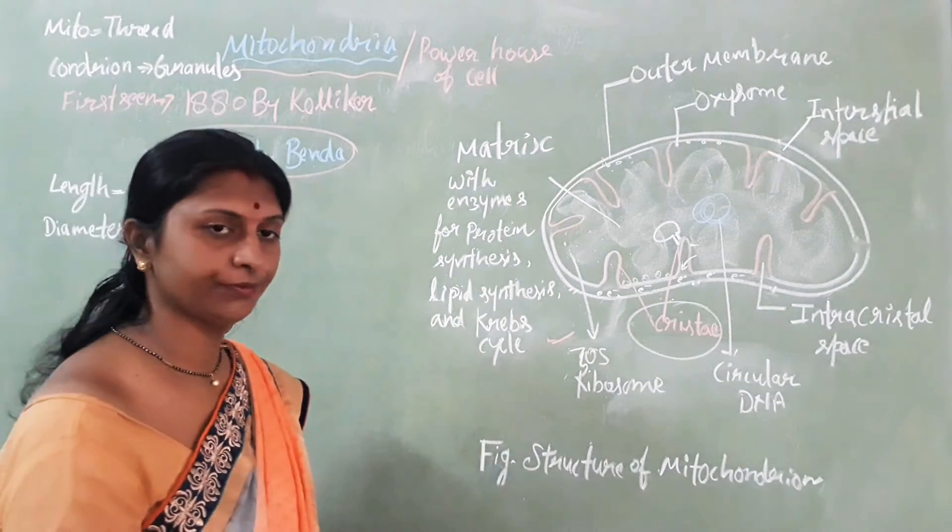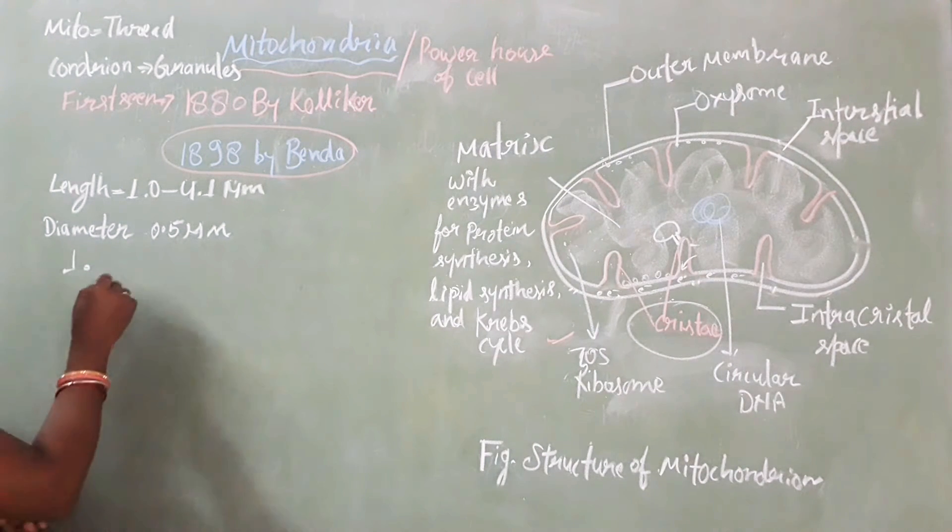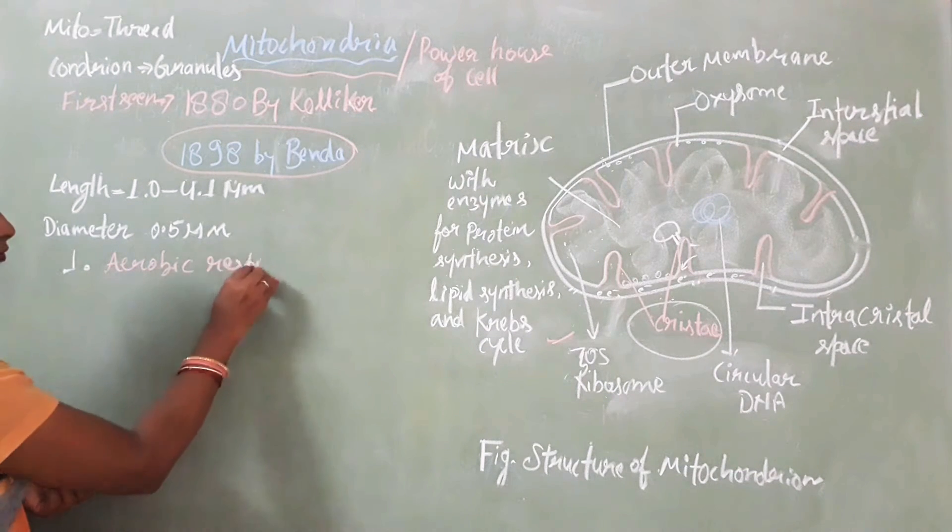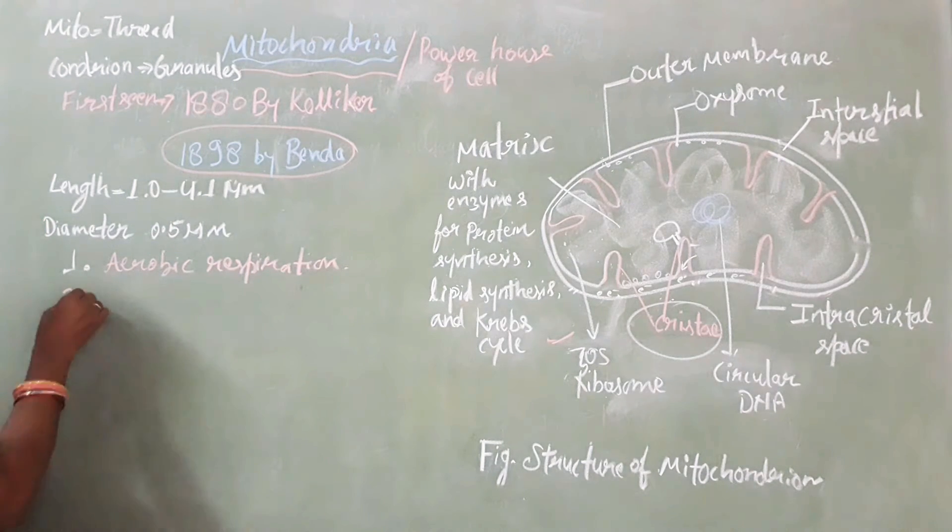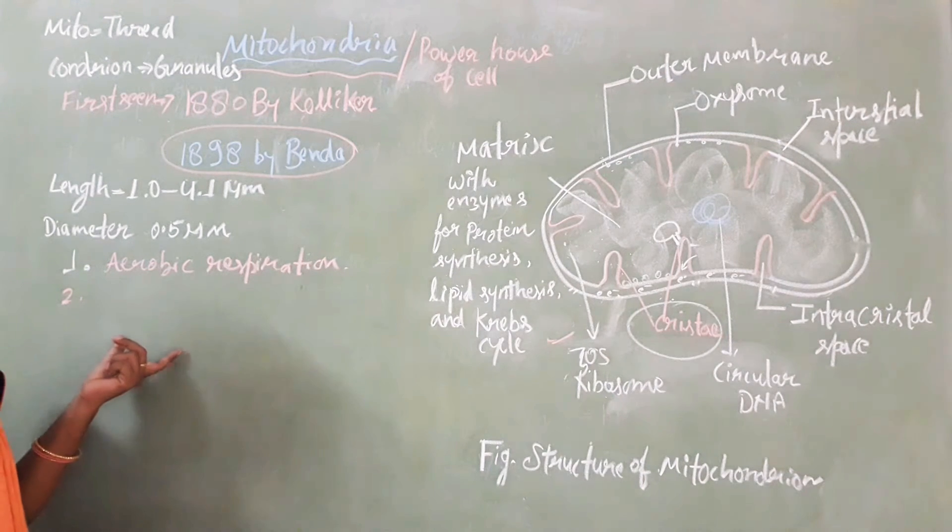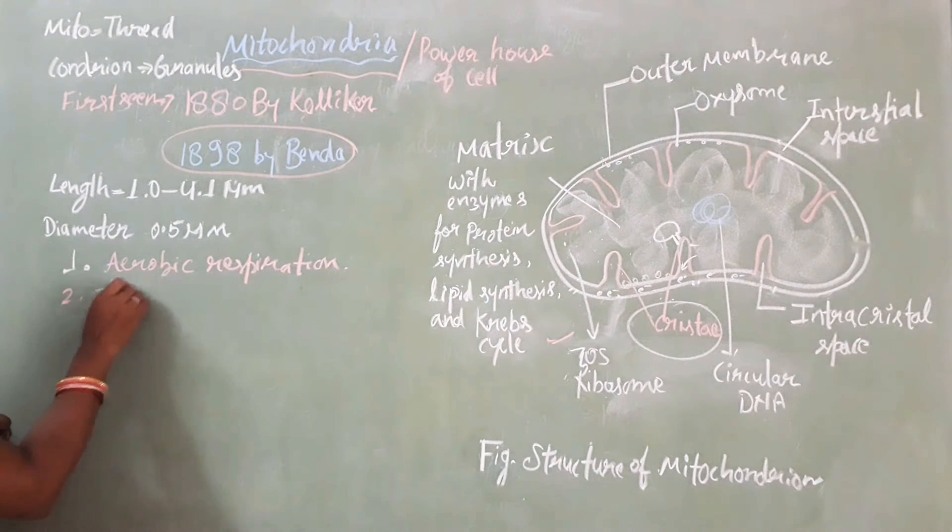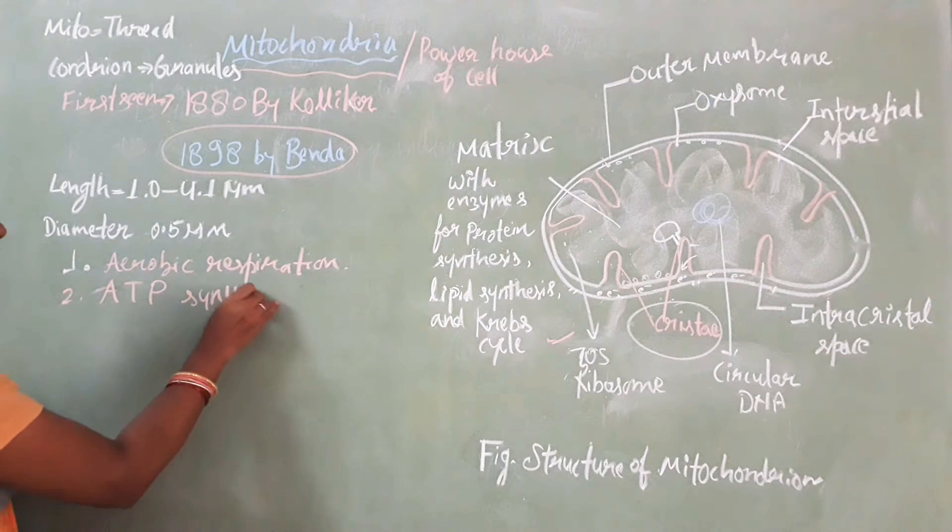Now let's see the functions in detail. In mitochondria, the first function is the site of cellular respiration and aerobic respiration. It is the site for synthesizing cellular currency, which is ATP. ATP is synthesized inside the mitochondria.